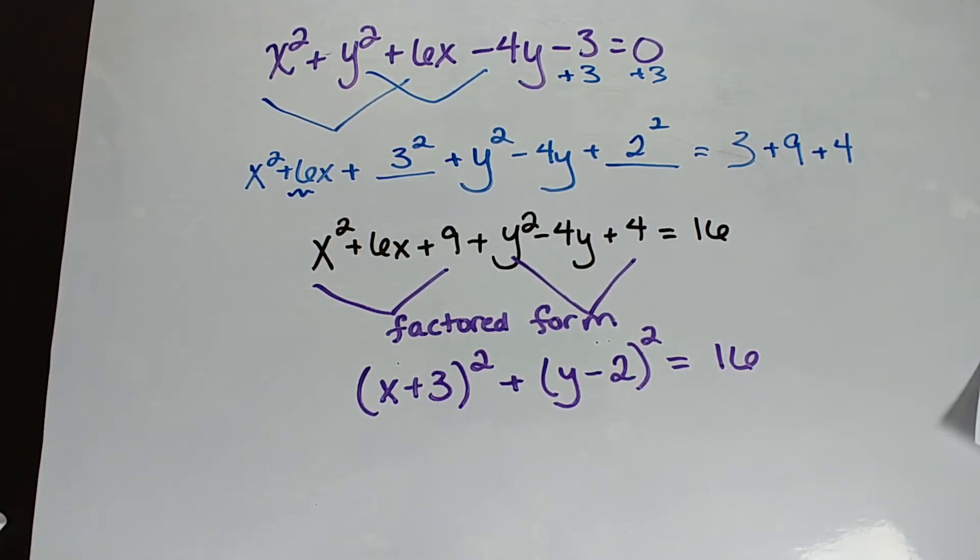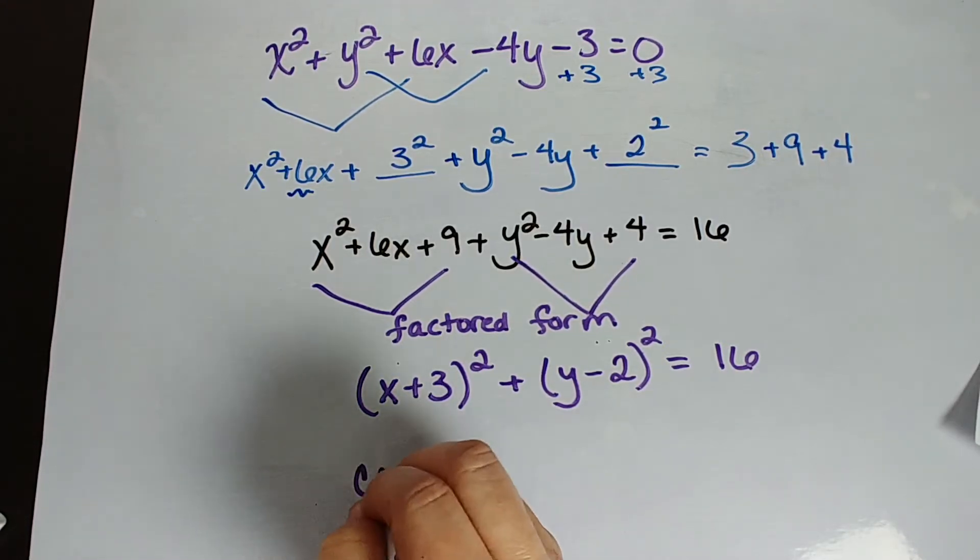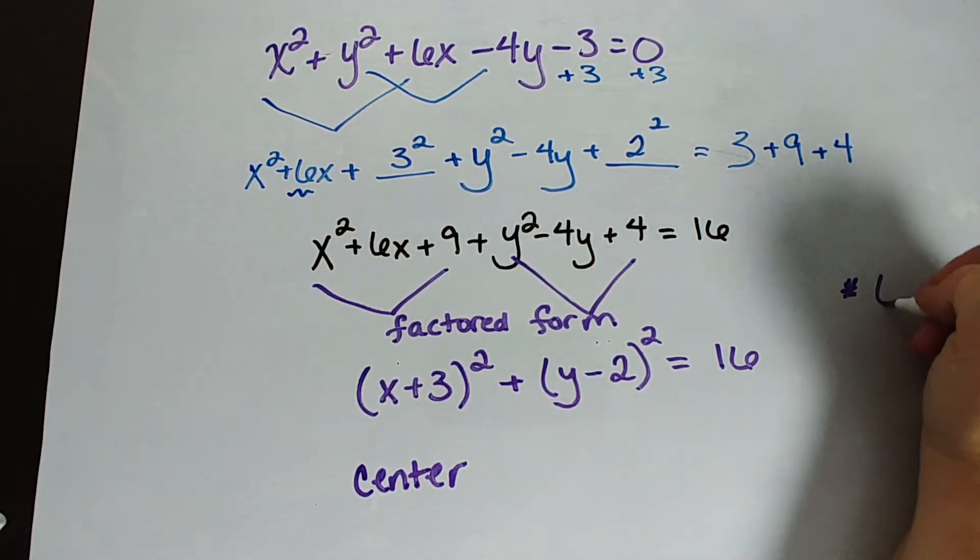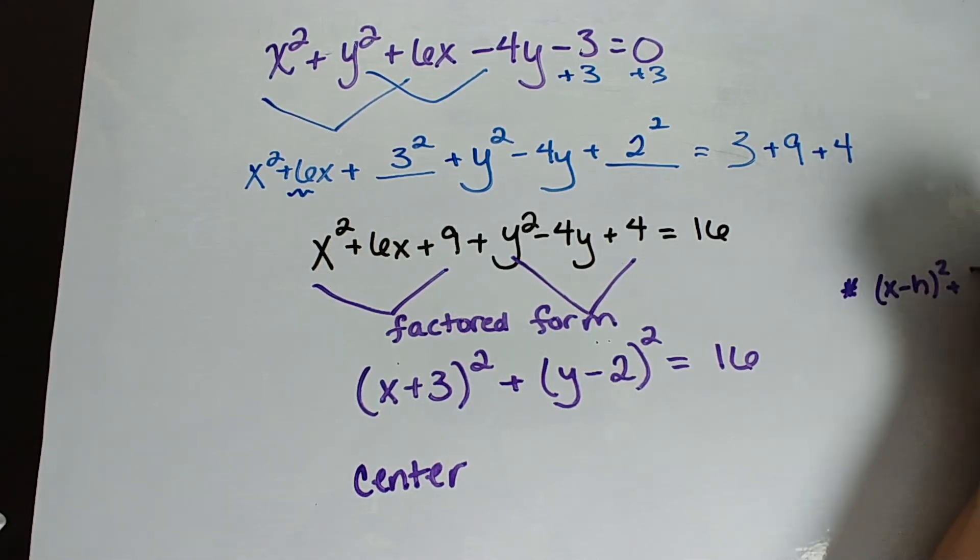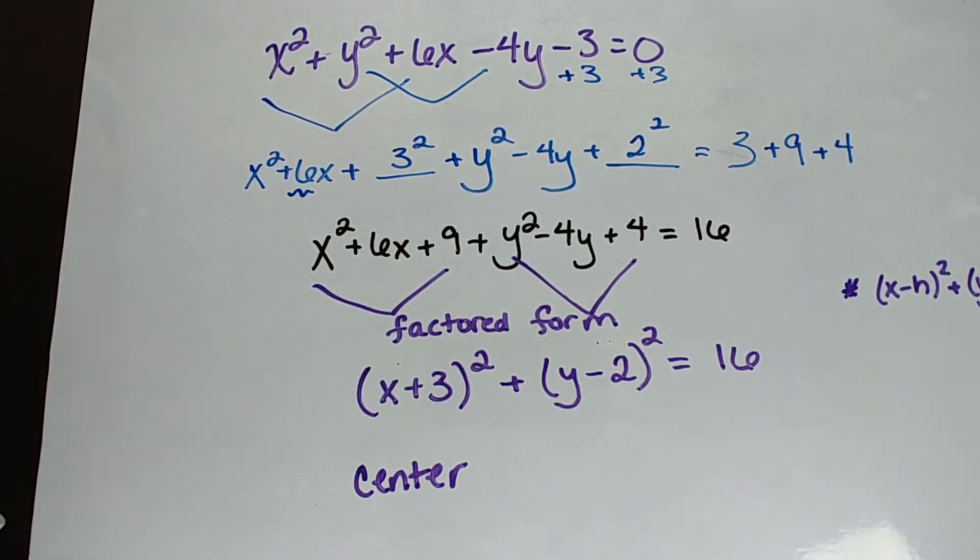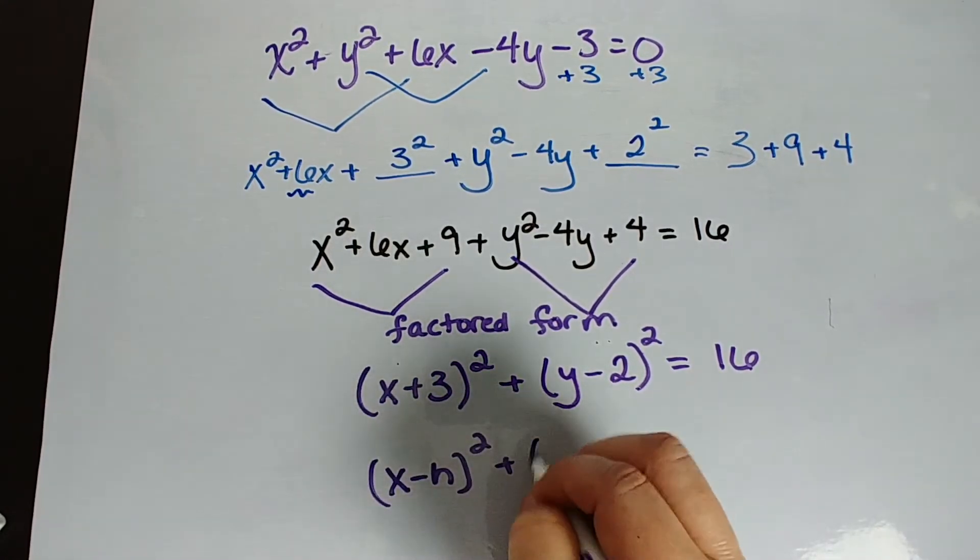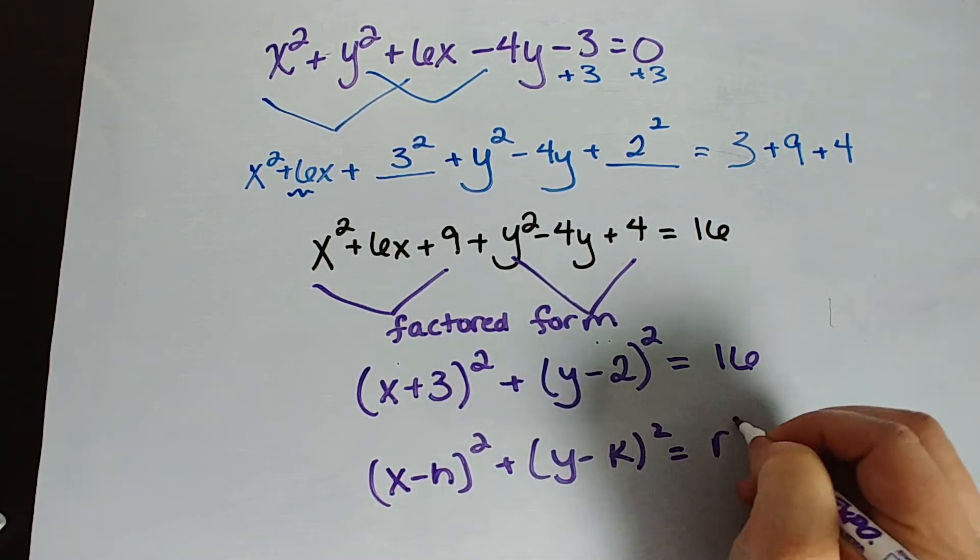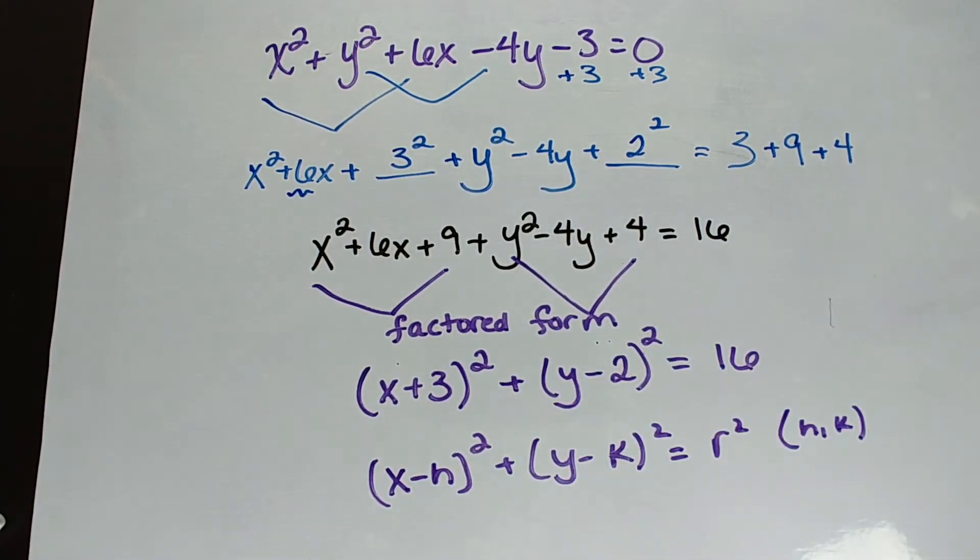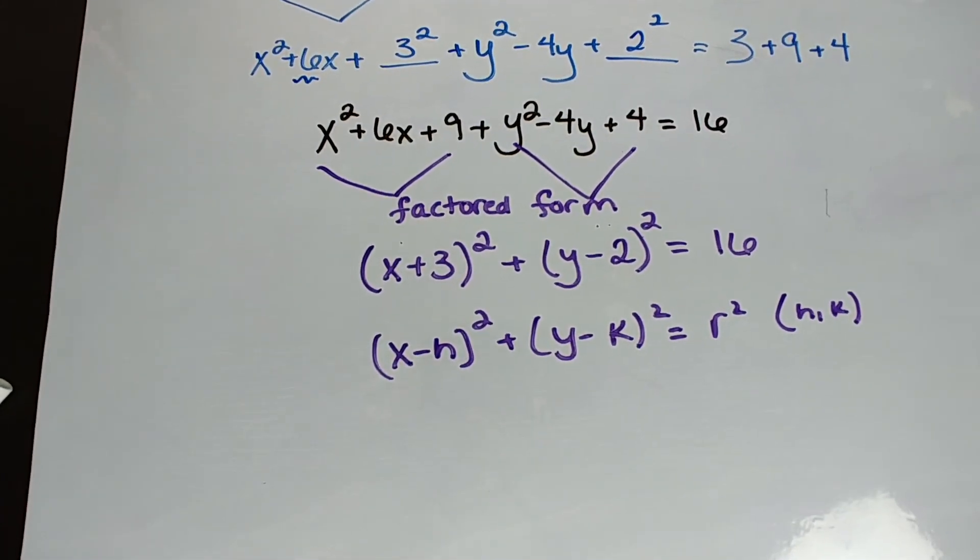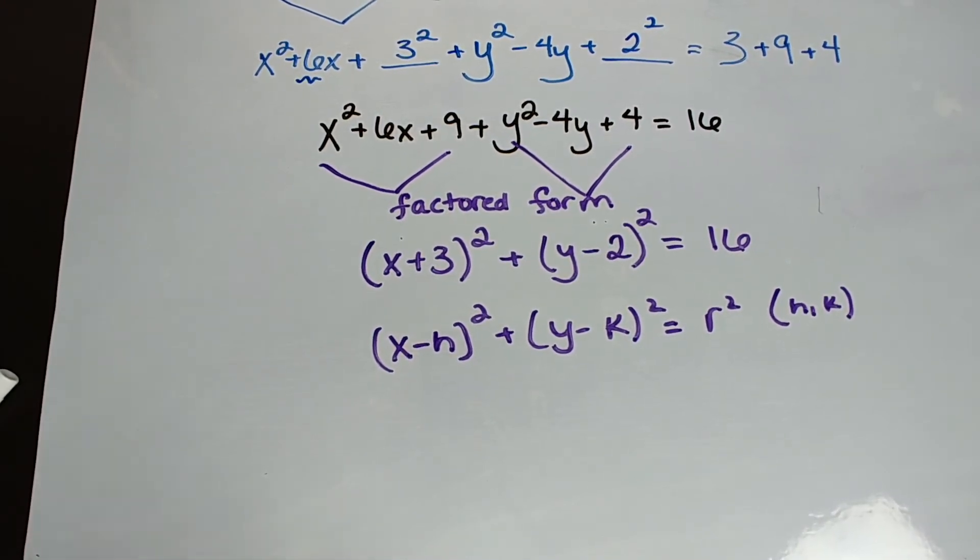We've written it in factored form, and we're actually done. This is standard form of our circle. We have a circle and the center of our circle. Remember, our equation is x minus h squared plus y minus k squared equals r squared. Our formula is x minus h squared plus y minus k squared equals r squared, where our center is hk and r is the radius.